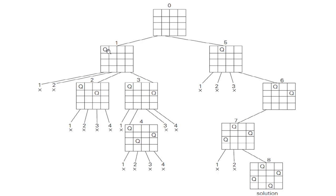First I will try with the first row, first column — I have placed the queen here. Next, I have to place the second queen in the second row. First column, I couldn't place it. Second column, I couldn't place it because there is a conflict. I can place it in the third column. So this is my partially constructed solution.